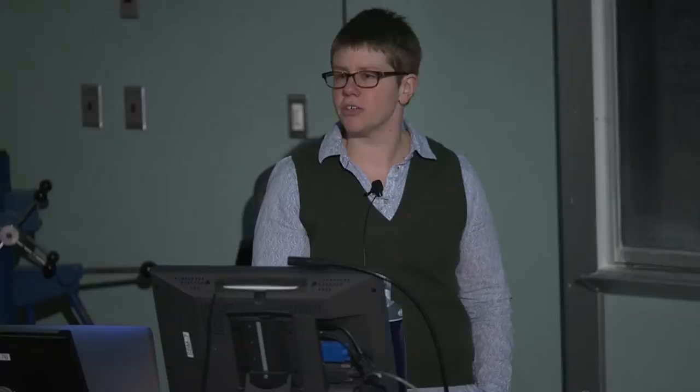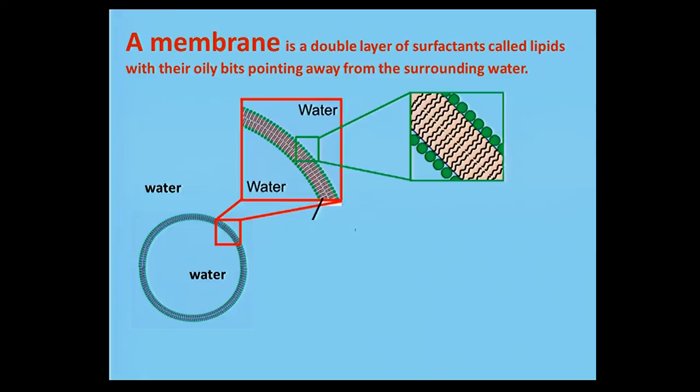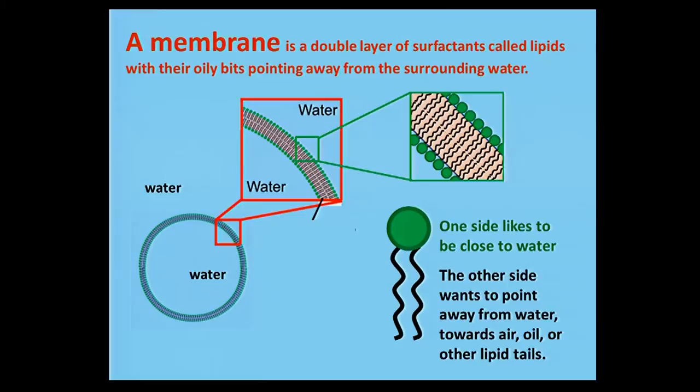A membrane is very similar to a bubble, but it all happens underwater. Instead of a thin layer of water, we're surrounded by water, and we have a thin layer of oily substance — but in this case the oily substance is the chains of these lipids. They have a very similar structure to common soaps: a hydrophilic side that likes to be near water, and a hydrophobic side that likes to be away from water. The hydrophobic side is a little bigger, so you can make this bilayer without having to have a layer of oil in the middle.